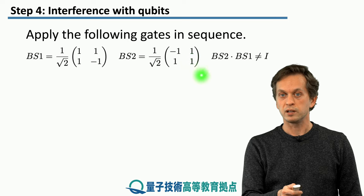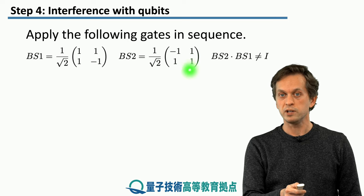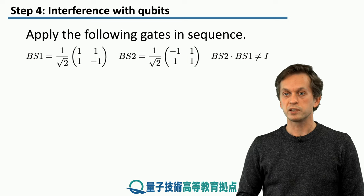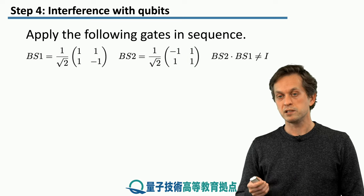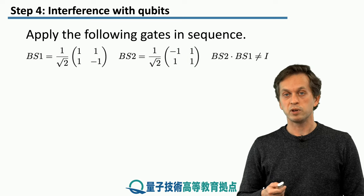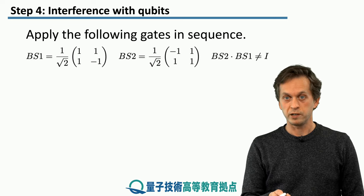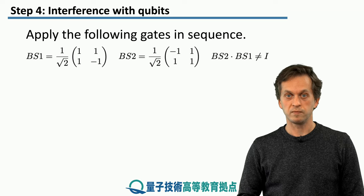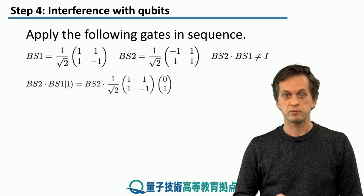And this BS2 looks a little bit similar like a Hadamard gate, but this time the minus is not located over here, but it's over there. But you can check for yourselves that applying these gates in sequence is not the same thing as doing nothing. In particular, BS2 times BS1 is not equal to the identity. But let's see what happens.